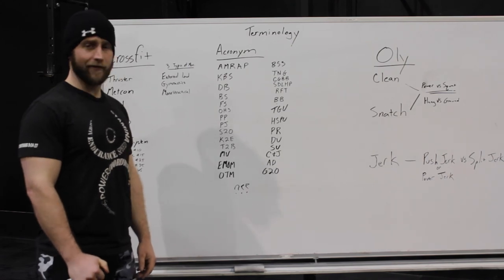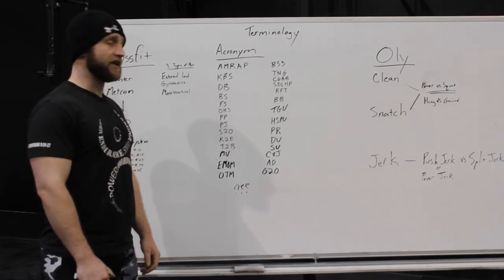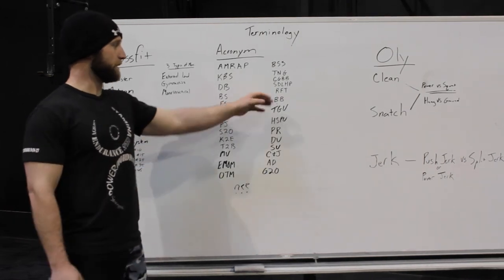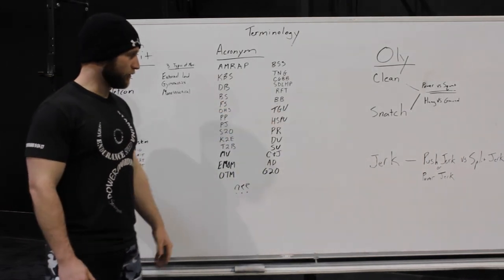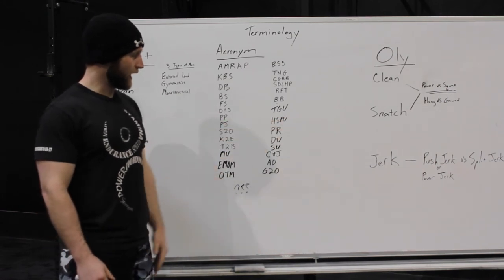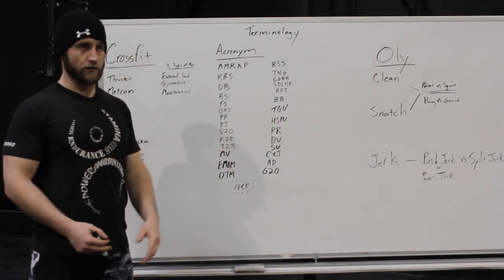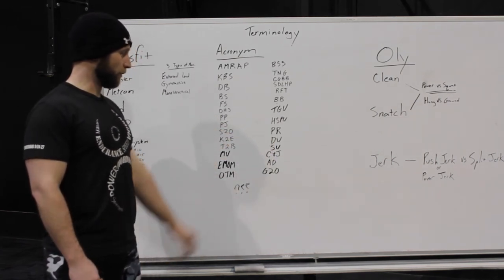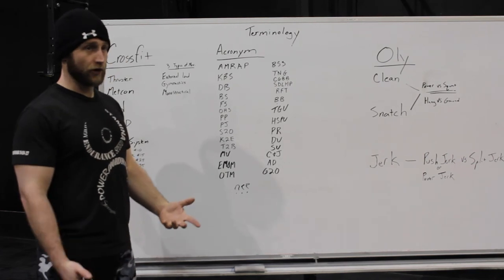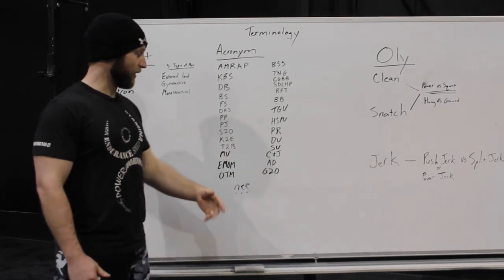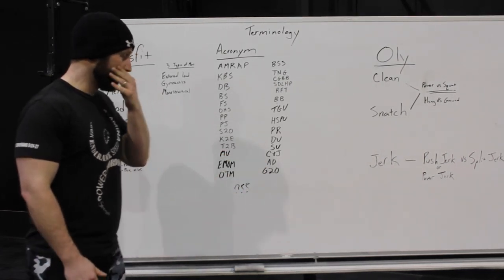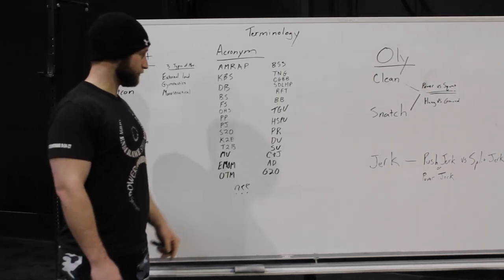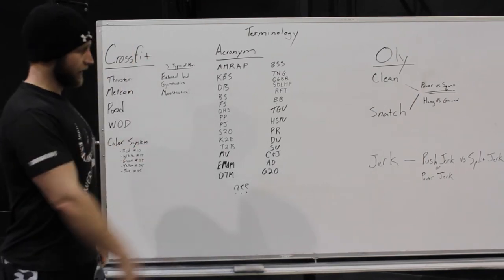SDLHP: sumo deadlift high pull. RFT: rounds for time — three rounds, five rounds, whatever number is in front. BB: barbell. TGU: Turkish get-up. HSPU: handstand push-up. PR: personal record or personal best. DU: double under. SU: single under. C&J: clean and jerk. AD: airdyne. G2OH: ground to overhead.